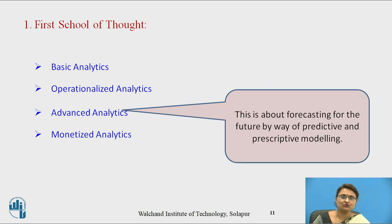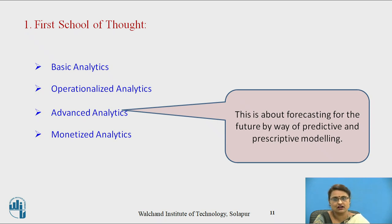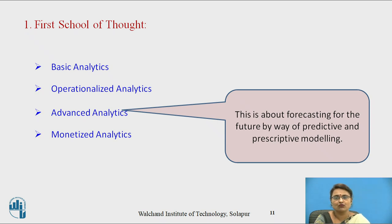In advanced analytics, it is about forecasting for the future — future predictions are done based on predictive analysis. Predictions are based on historical or available data, which provides information and knowledge about what will happen in the future. It also provides prescriptive modeling, which is a combination of descriptive analysis as well as prediction.